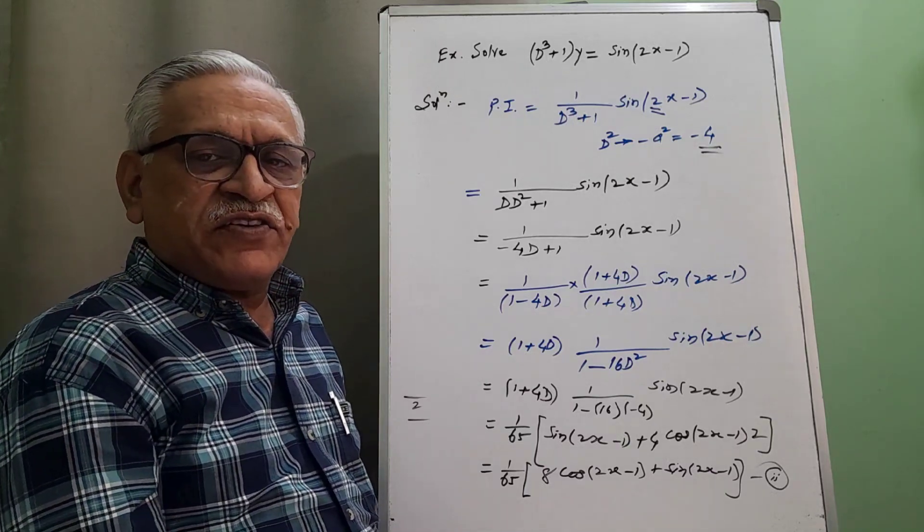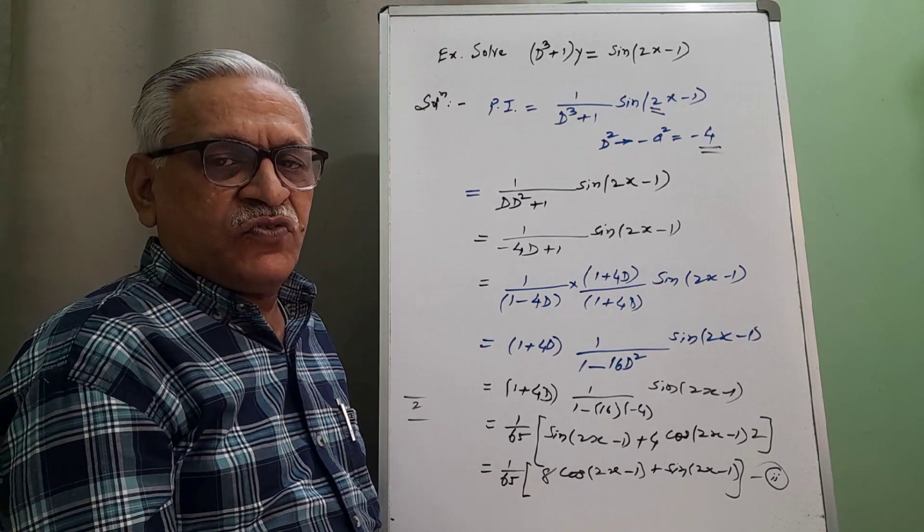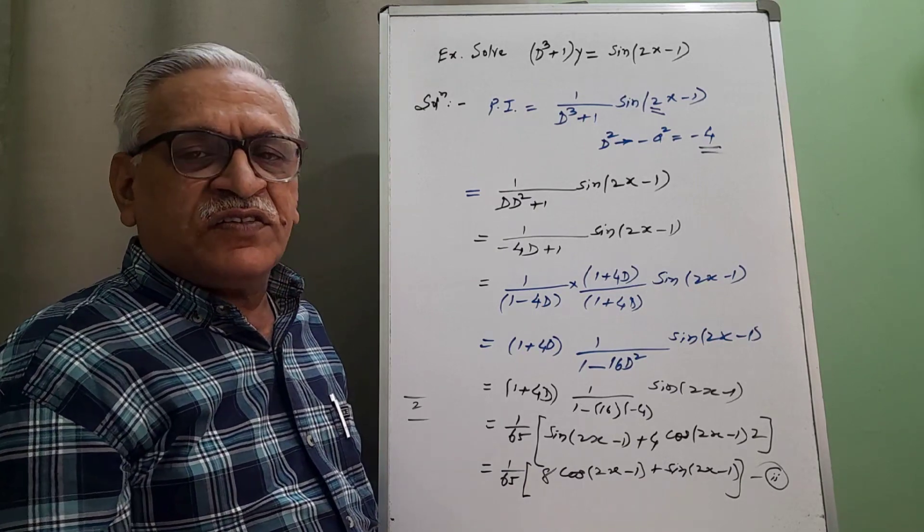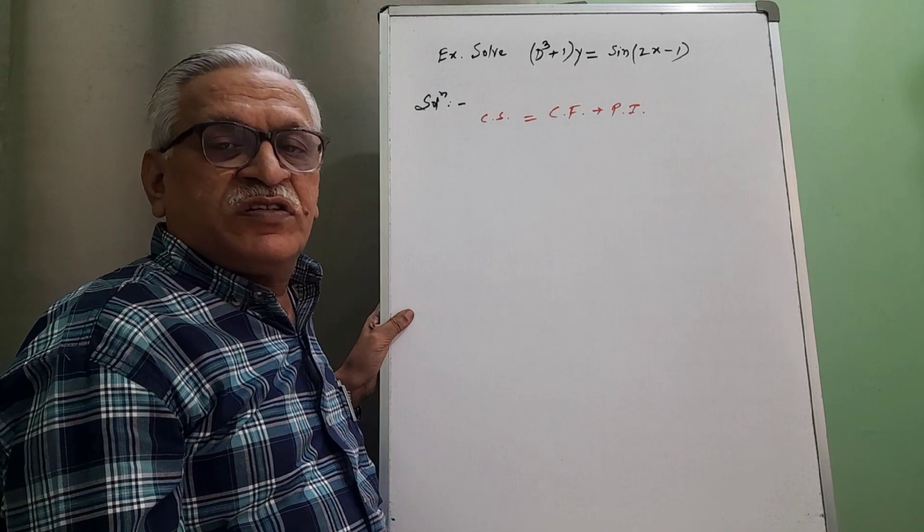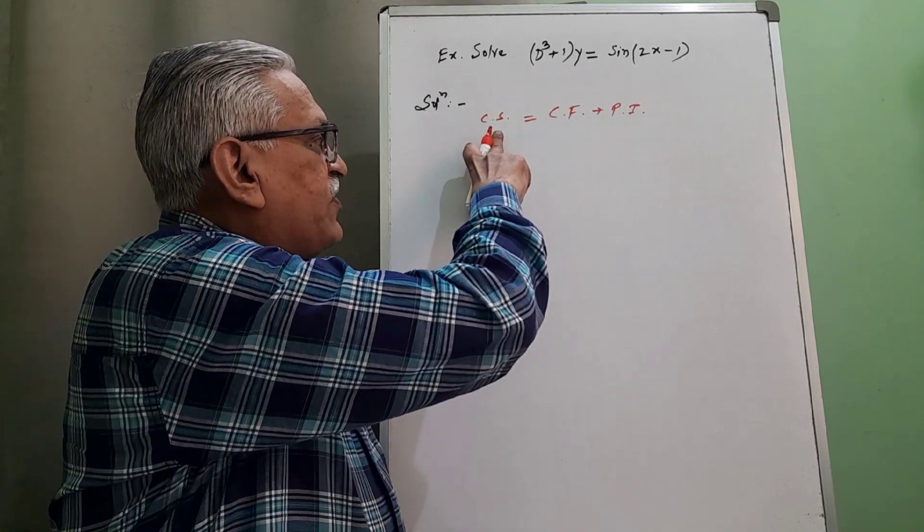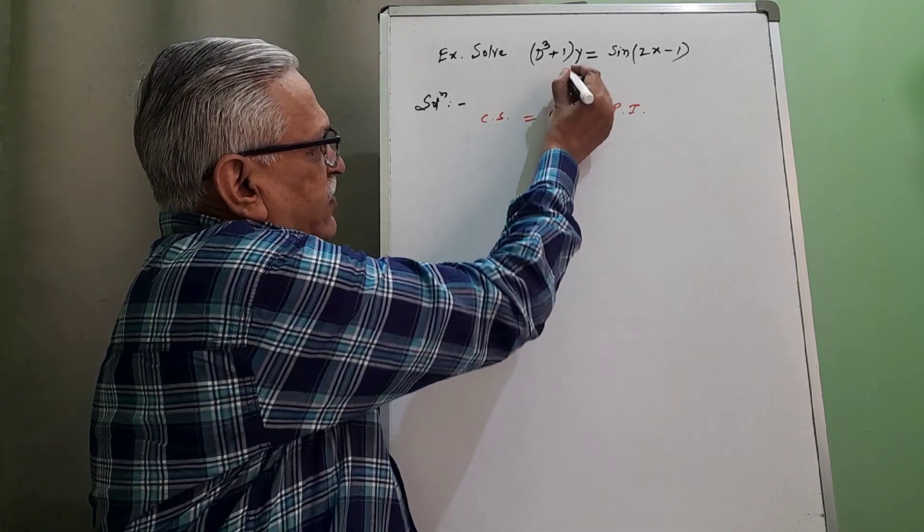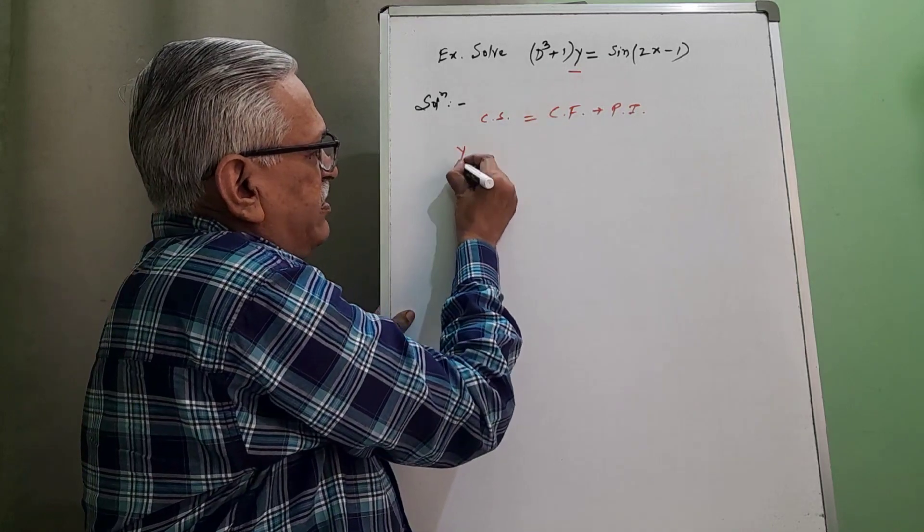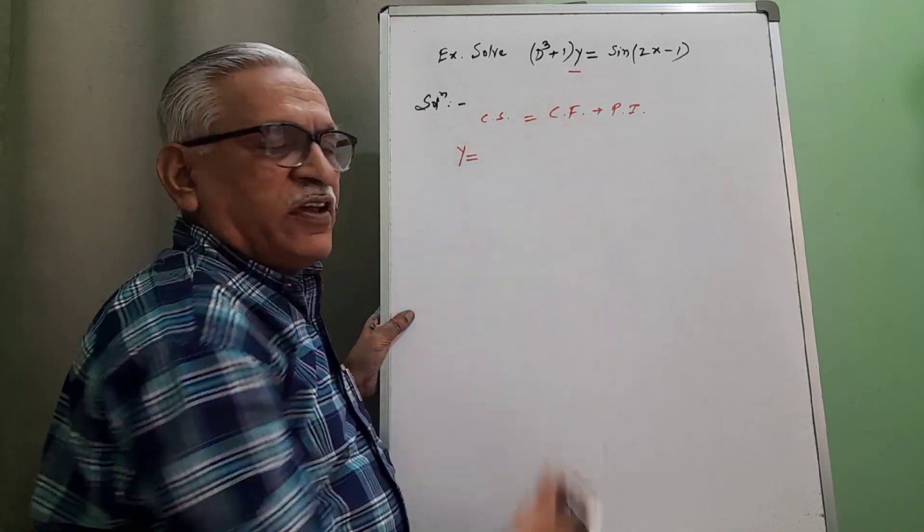Then final solution is addition of equation 1 and equation 2. That is, complete solution is CF plus PI. Complete solution is given by complementary function. It is always for the dependent variable. Here dependent variable is y.